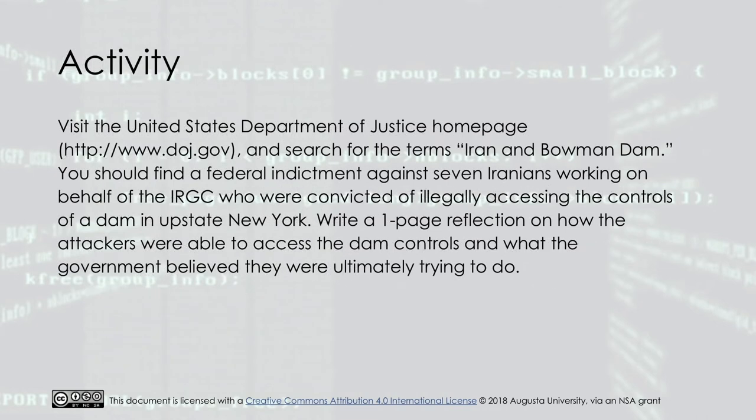Activity: Visit the United States Department of Justice home page and search for the terms 'Iran' and 'Bowman Dam.' You should find a federal indictment against seven Iranians working on behalf of the IRGC who were convicted of illegally accessing the controls of a dam in upstate New York. Write a one-page reflection on how the attackers were able to access the dam controls and what the government believed they were ultimately trying to do.